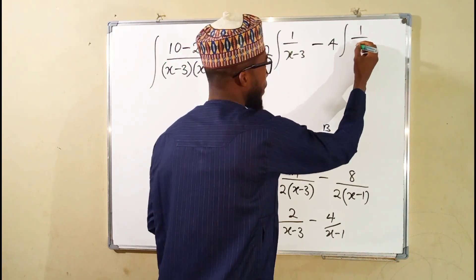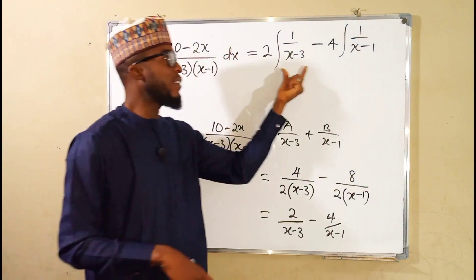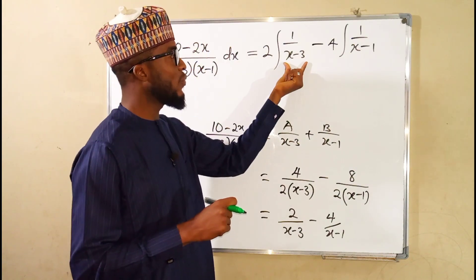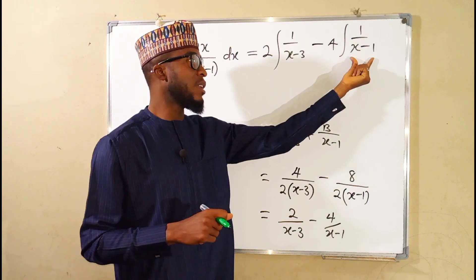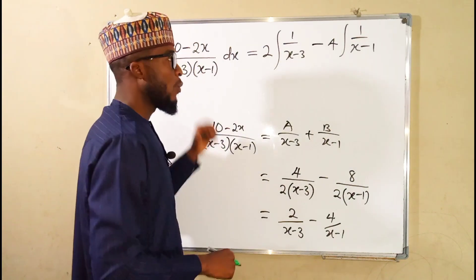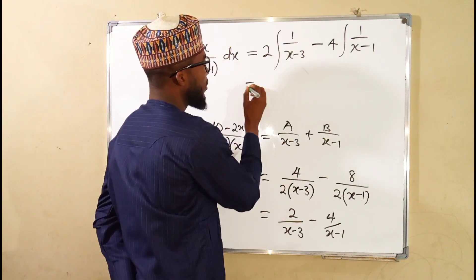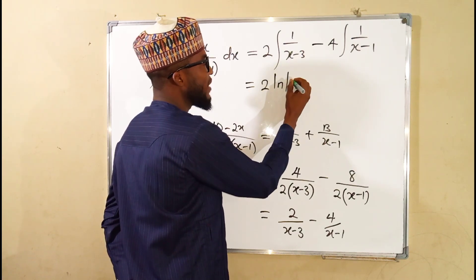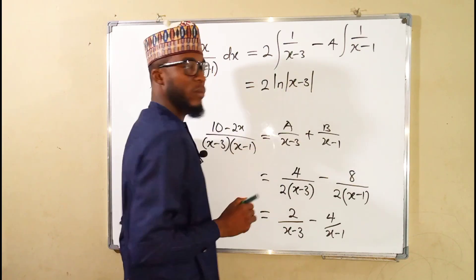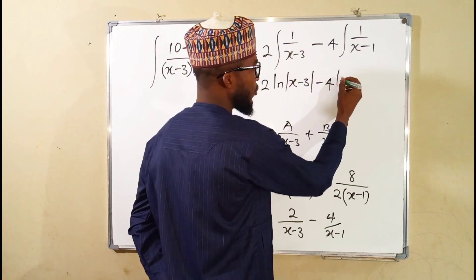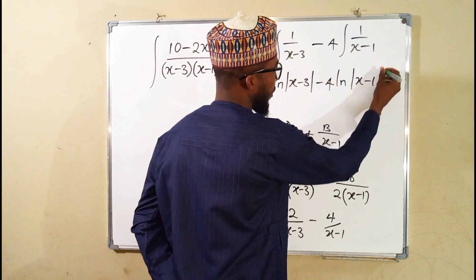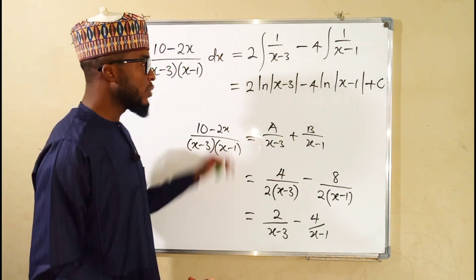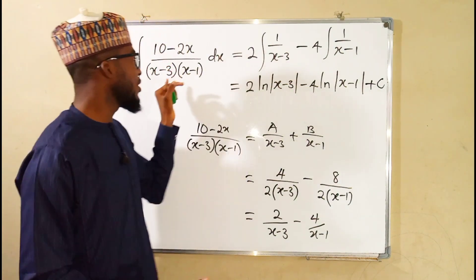In each of these two functions, if you differentiate the denominator it gives exactly the numerator — the derivative of (x minus 3) is 1, and likewise for (x minus 1). Whenever you have fractions in that form, the integral is the natural log of the absolute value of the denominator. So the result is 2 times ln|x minus 3| minus 4 times ln|x minus 1| plus the constant of integration C.